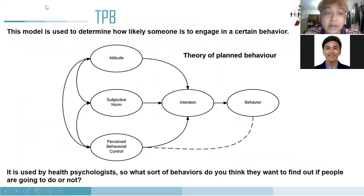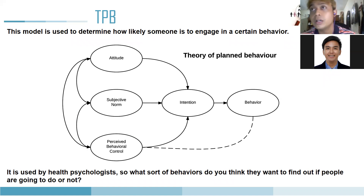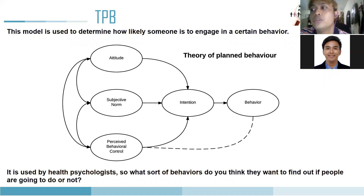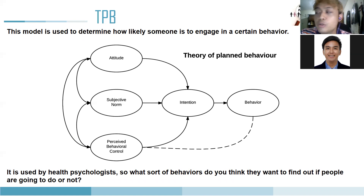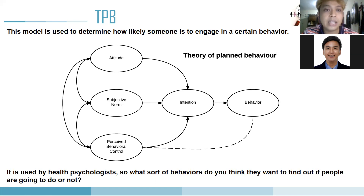Another model is the theory of planned behavior (TPB) — how someone engages in a certain behavior. It can be applied to health behavior, green behavior, buying solar panels, using electric vehicles, and many more. There are more than 40,000 studies about TPB. The standard latent variables in the original TPB are attitude, subjective norm, perceived behavioral control, intention, and real behavior.